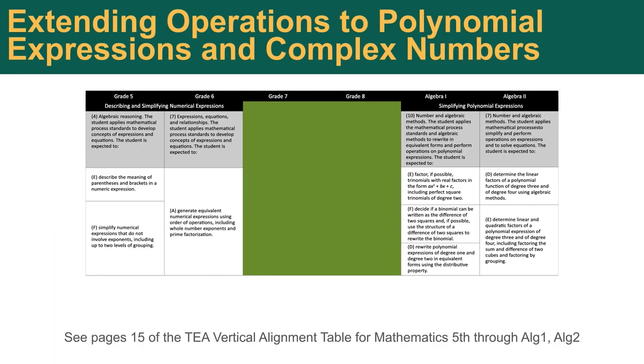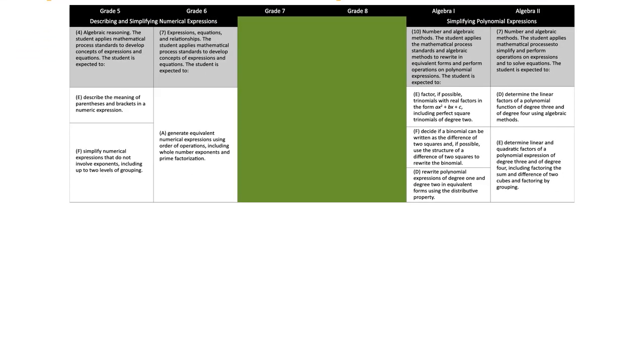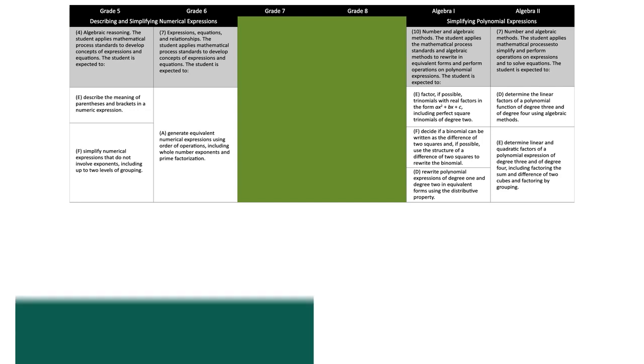Lastly, in Unit 6, we have standards 10E and F, though we also touch once more on 10D. Let's look at the vertical alignment of these standards, once again, starting in 5th grade.